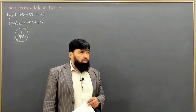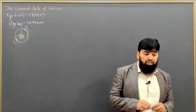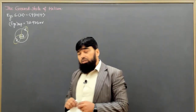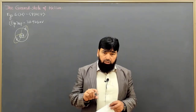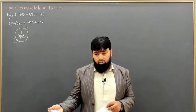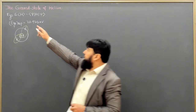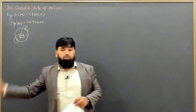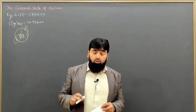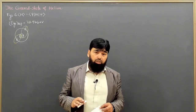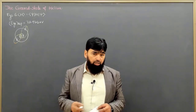In the variational principle, what we do is consider a trial wave function. If the trial wave function is not normalized, we normalize it and then calculate the expectation value of the Hamiltonian on it. It matters how accurately we write the Hamiltonian of our system, which is the sum of kinetic energy and potential energy.